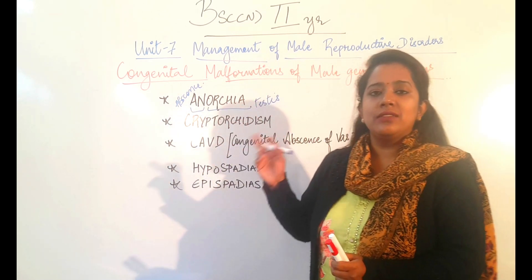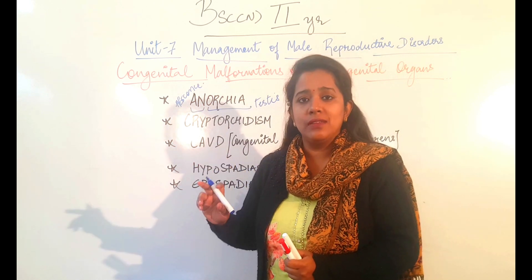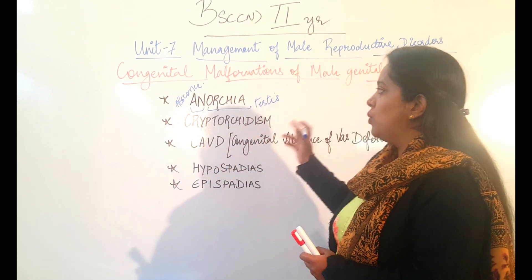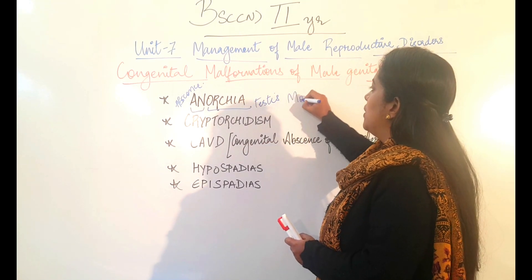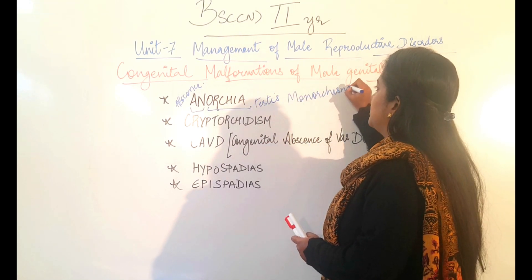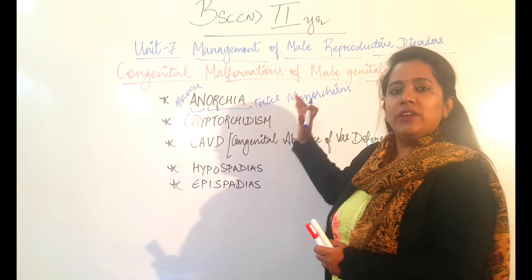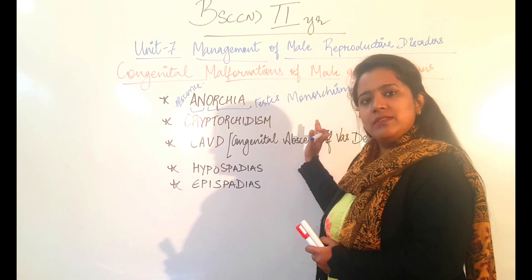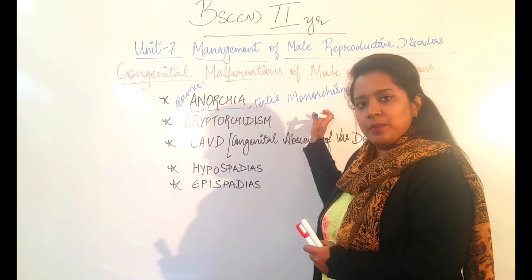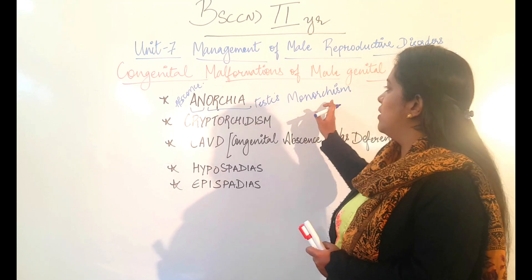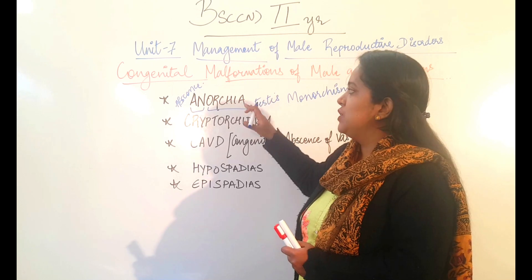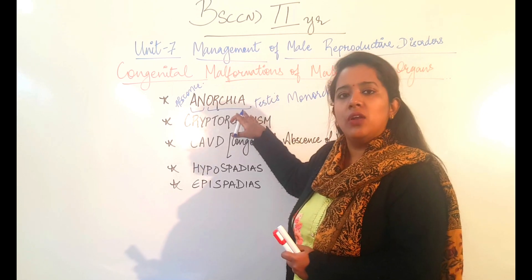And if one testis is absent and one testis is present, which also happens rarely, that condition is called Monorchism. So to summarize: if both testes are present, that is normal. If one testis is present and one is absent, that is Monorchism. And if both testes are absent, that condition is called Anorchia.